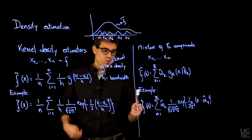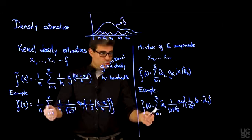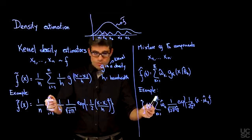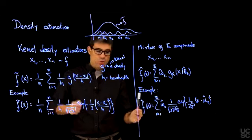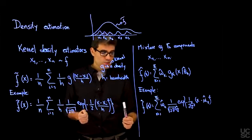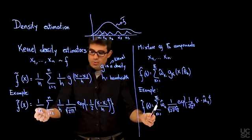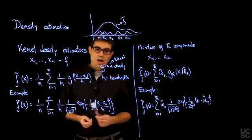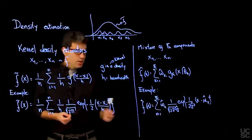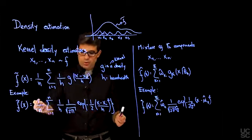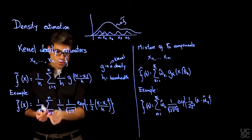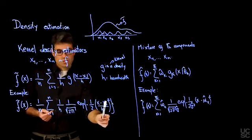We have as many components as observations in this quote-unquote mixture that we have on this side, whereas here, we are going to have capital K components that are typically smaller than the number of observations that we're working with. This looks like a mixture with just a larger number of components in the case of the kernel density estimator.